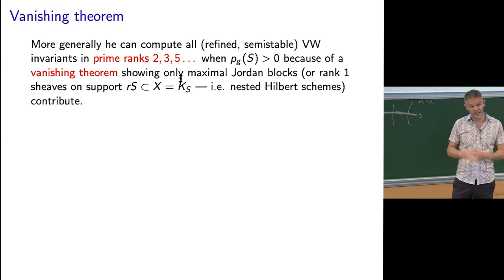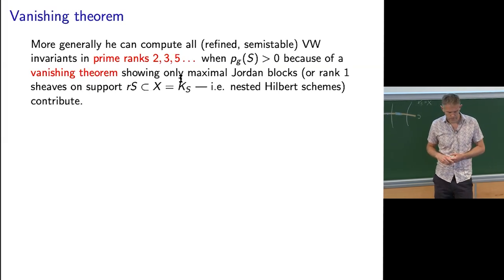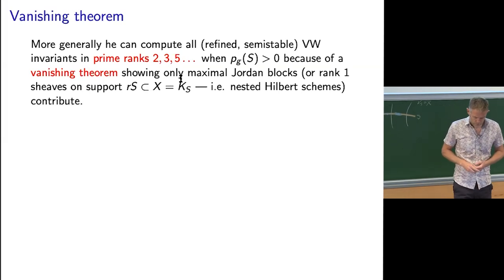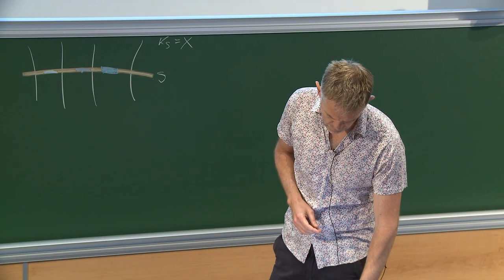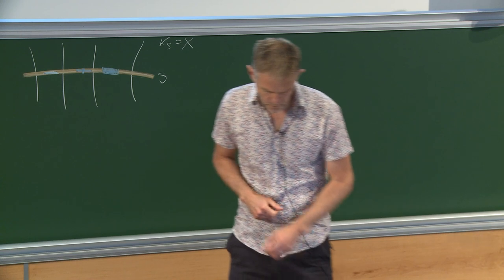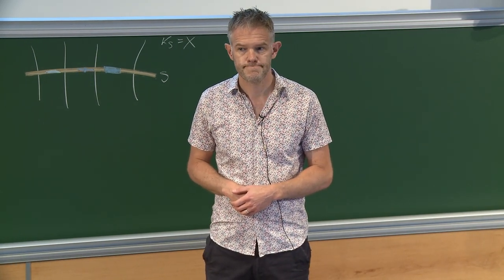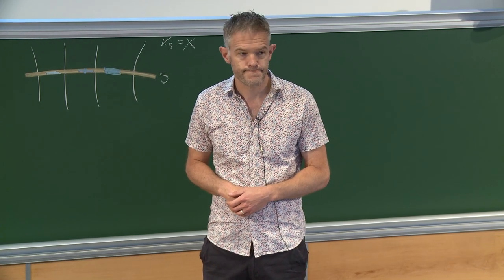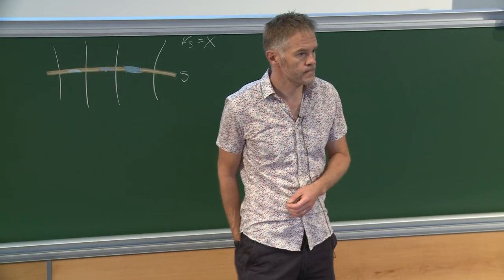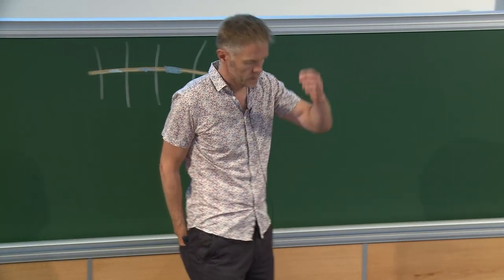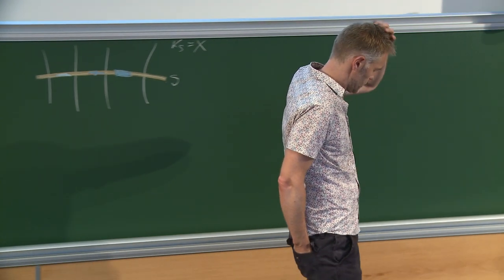Next time I'll start with the vanishing theorem. Georg talked about a version of this and I'll talk about it in more detail. So what we've done today is explain how to compute these Vafa-Witten invariants in the case corresponding to maximal thickness of S with rank 1 over the top — so these profiles 1,1,1,...,1. Now we need a vanishing theorem which says the others don't contribute, and that's what I'll talk about next time.